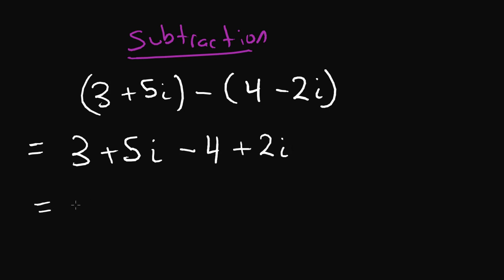And then it turns into pretty much just like the case of addition. We have 3 minus 4 plus 5i plus 2i. That's equal to negative 1 plus 7i.